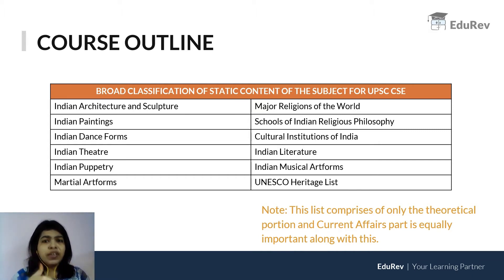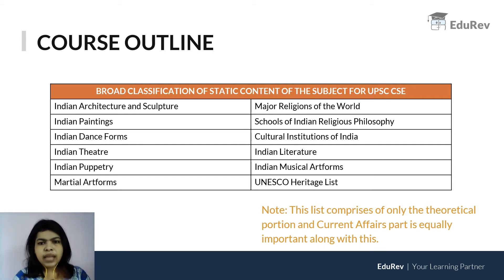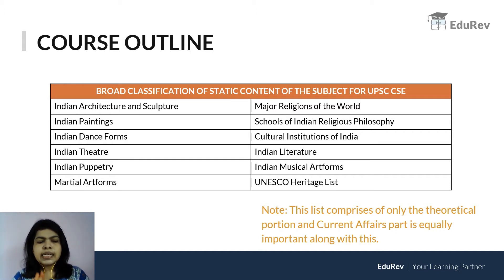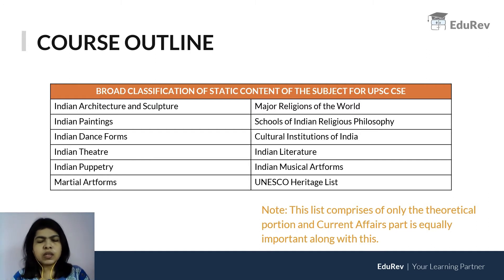These four topics — dance forms, theatre, puppetry and martial art forms — are very closely interlinked with one another. If you take a particular dance form or martial art form, you can actually interlink it with some other puppetry or martial art form. Then we have Indian literature, musical art forms, and a topic like UNESCO's heritage list. This list comprises entirely of the static part, and of course there is the whole world of current affairs — the dynamic content — that we will be dealing with in a separate topic.